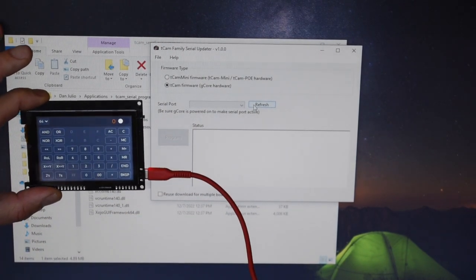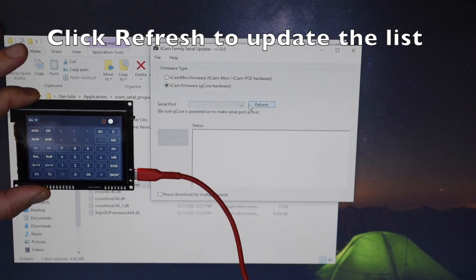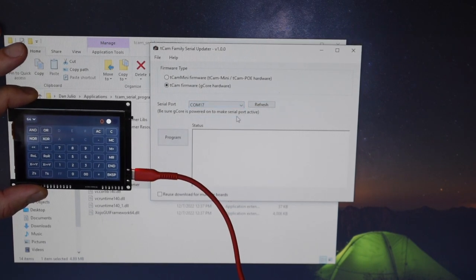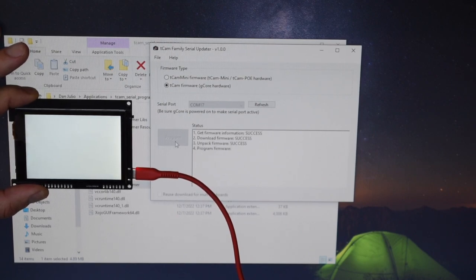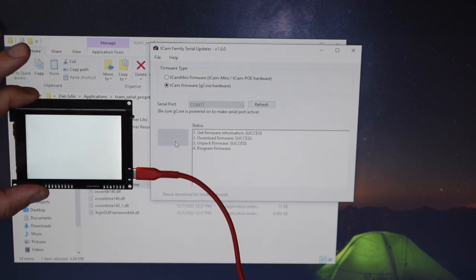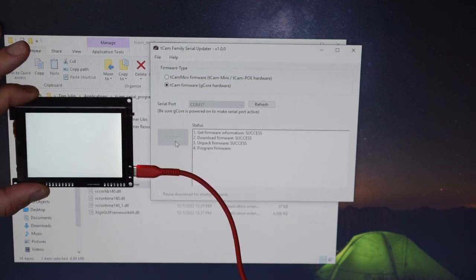Then plug G-Core into your computer's USB port and turn it on. Checking the serial port list again will show the new port associated with G-Core. Select that port and click the program button. It will download the latest firmware and load it onto G-Core.